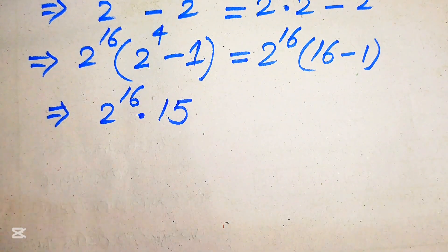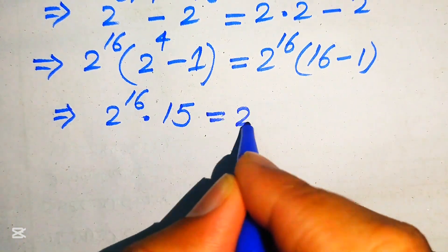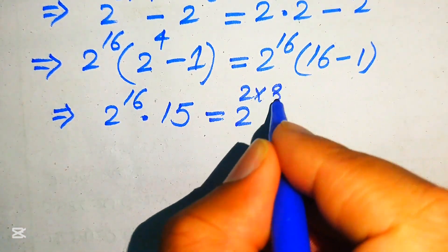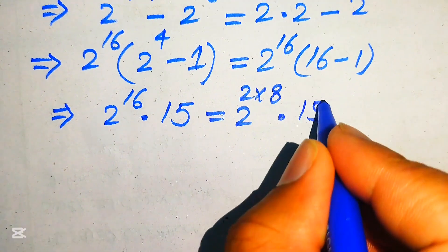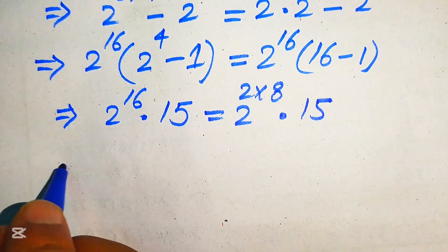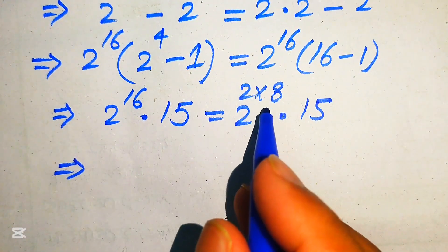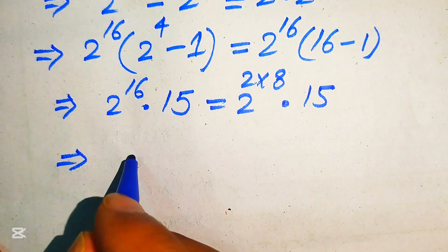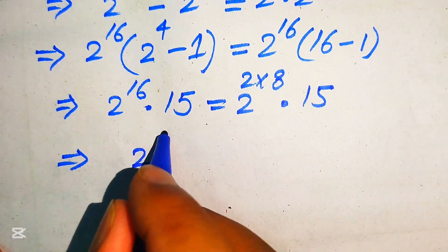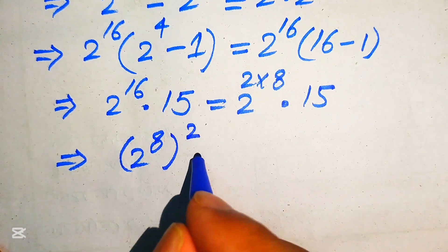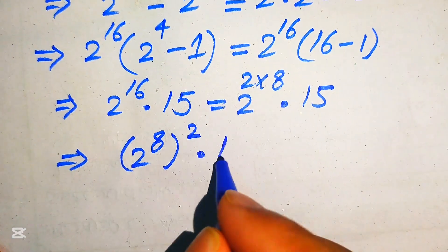Our next step is to find the value of 2 to the power of 16. We write 2 to the power of 16 as 2 to the power of 2 multiplied by 8, then move the 8 inside so it becomes 2 to the power of 8, whole squared, multiplied by 15.